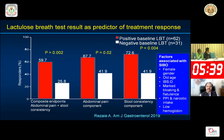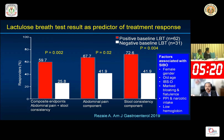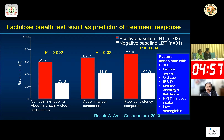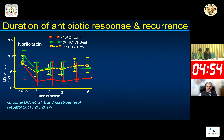Clinical predictors of SIBO among IBS patients include: female gender, older age, IBS-diarrhea subtype rather than IBS-constipation, marked bloating and flatulence, development of IBS symptoms while on PPI or narcotic analgesic use, and a lower hemoglobin level. If these clinical clues are present, you can suspect a higher probability of bacterial overgrowth and consider treating with an antibiotic or probiotic targeted against SIBO.